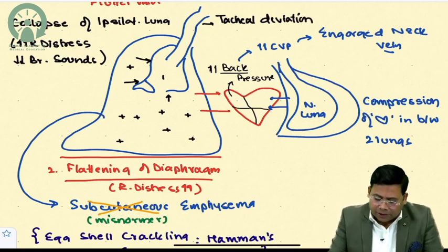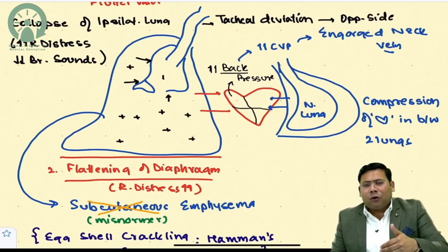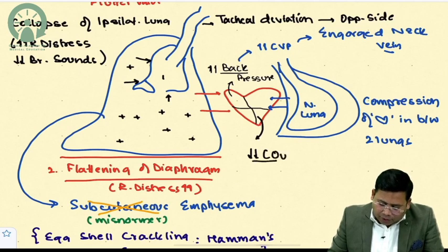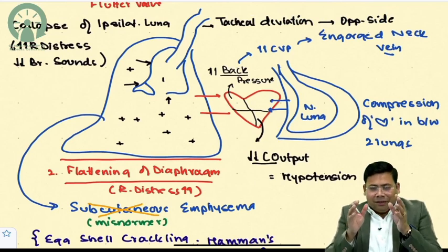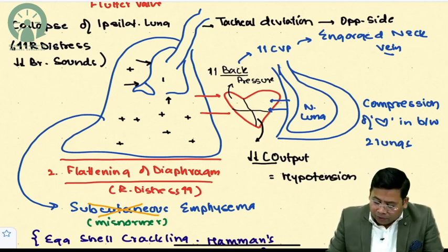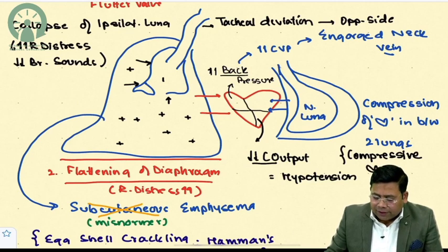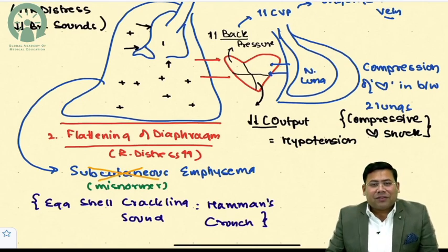Tracheal deviation is to the opposite side. If the heart is compressed, blood cannot enter properly, causing a drastic decrease in cardiac output — which manifests as hypotension. This is compressive cardiogenic shock. Tension pneumothorax is therefore any pneumothorax where compressive cardiogenic shock is present. Without it, it is not tension pneumothorax.